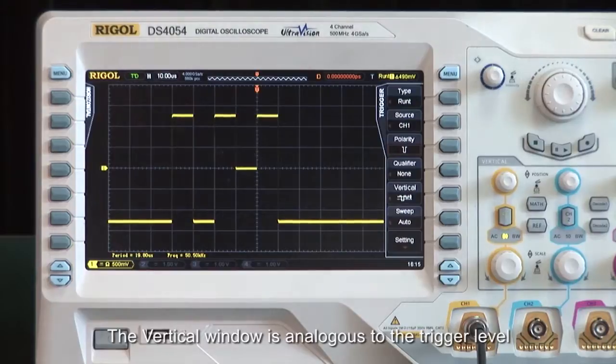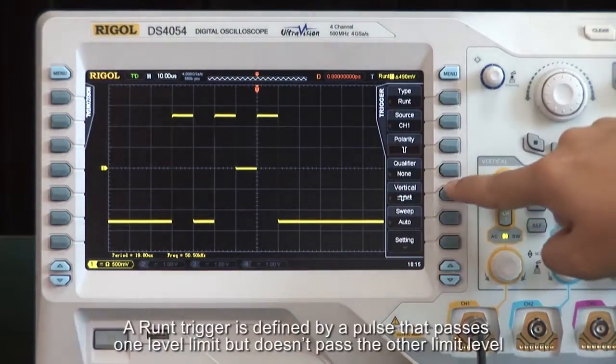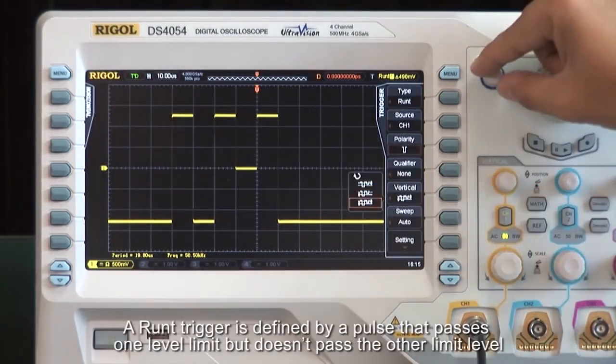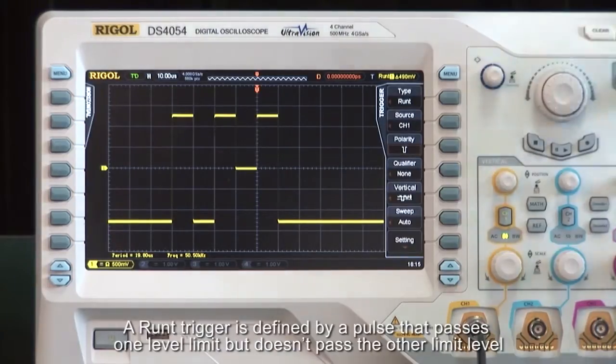The vertical window is analogous to the trigger level. A Runt trigger is defined by a pulse that passes one level limit, but doesn't pass the other limit level.